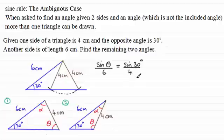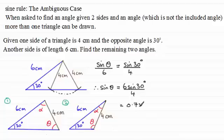Rearranging this for sine theta, we end up with sine theta equals 6 times sine of 30 degrees, all divided by 4. If you work this out in your calculator, you find that you get 0.75. Therefore angle theta will be the inverse sine of 0.75.